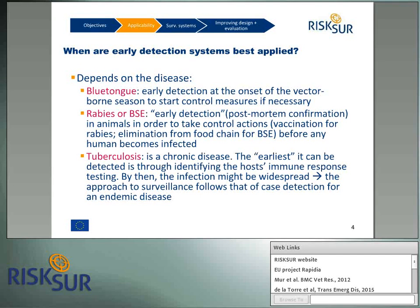Early detection systems are more applicable to certain diseases rather than others. For example, bluetongue is a vector-borne disease of ruminants and the onset of the transmission season can be predicted through the increase in vector population, which can also be predicted by analysing climatic and environmental data to which the vector population is susceptible. The confirmation of bluetongue virus can be done by detecting the pathogen or antibodies in a previously naive population, with or without clinical signs. However, rabies or bovine spongiform encephalopathy — BSE — are more difficult to predict, particularly since confirmation of the disease in animals is only at the post-mortem stage.